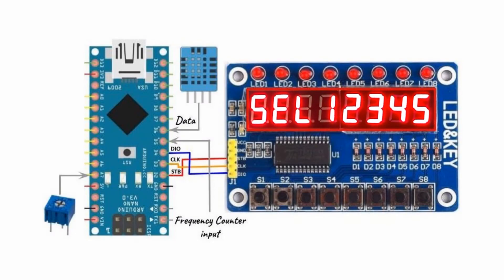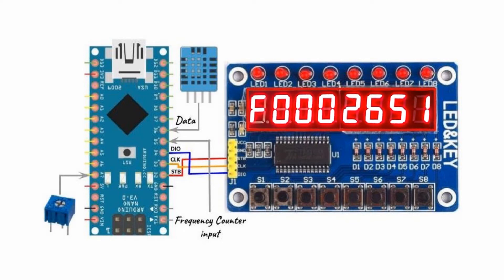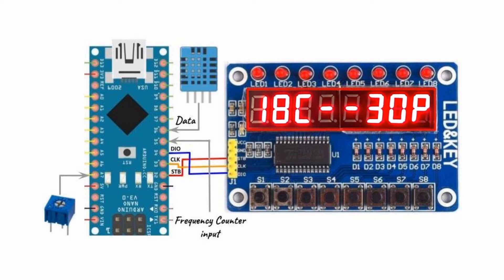Now for a quick demonstration — we press S1 to get the frequency counter, and pressing S1 again will take us back to the main menu. Pressing S2 will give us the temperature in Celsius and the humidity in percentage. We press S2 again and we go back to the main menu.